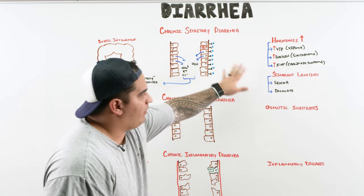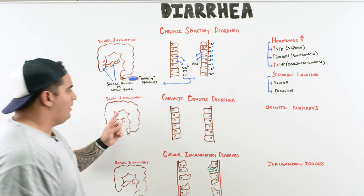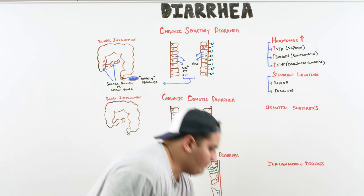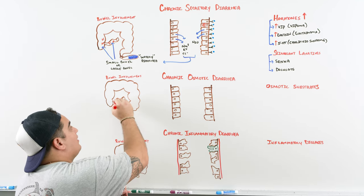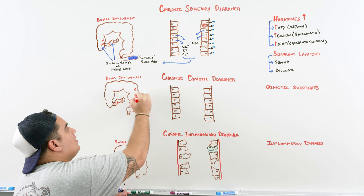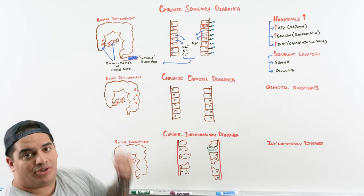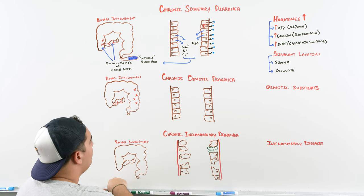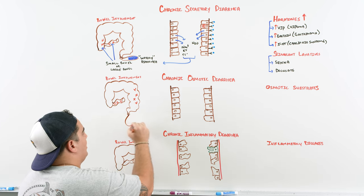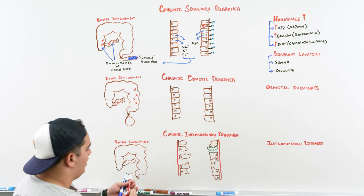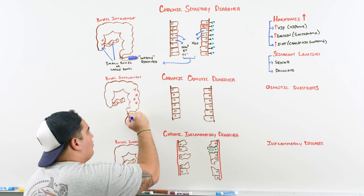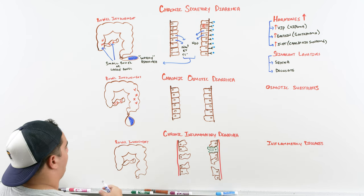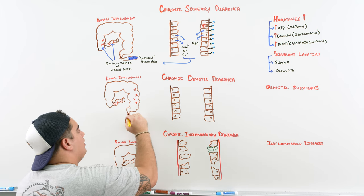Now for chronic osmotic diarrhea — it can hit both small and large bowel. Looking at the stool, it can vary: it could be watery, or it could be fatty. The fatty diarrhea is called steatorrhea — fatty, greasy stools.